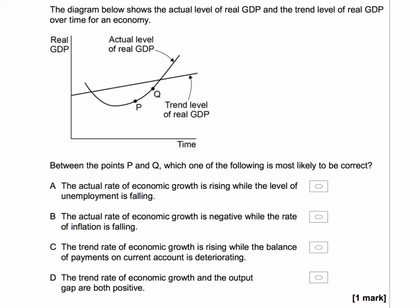So the actual level of GDP is cyclical and we're moving from P to Q on the upturn phase of the cycle. The trend line is a straight line — that's a representation of the trend growth of potential national output.